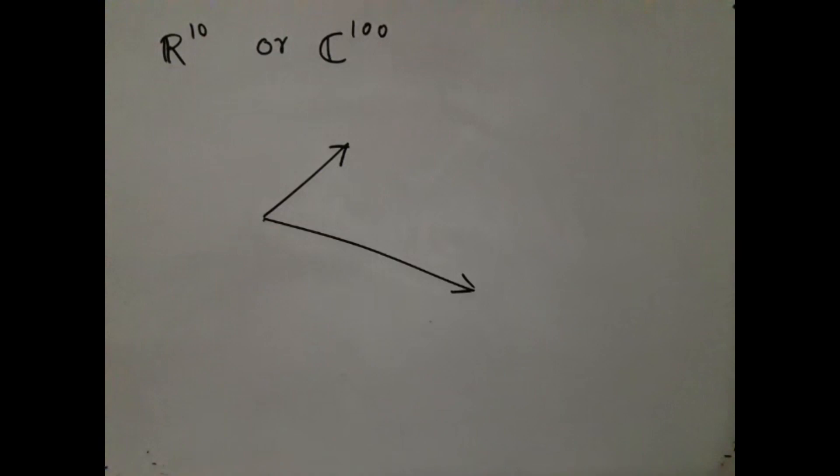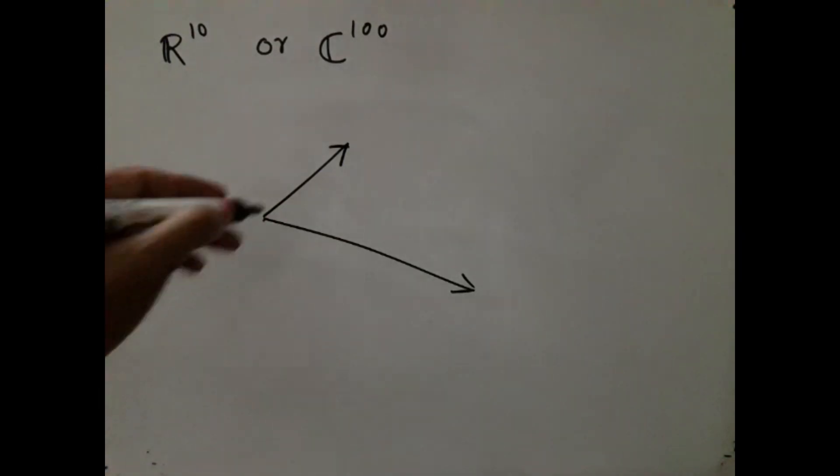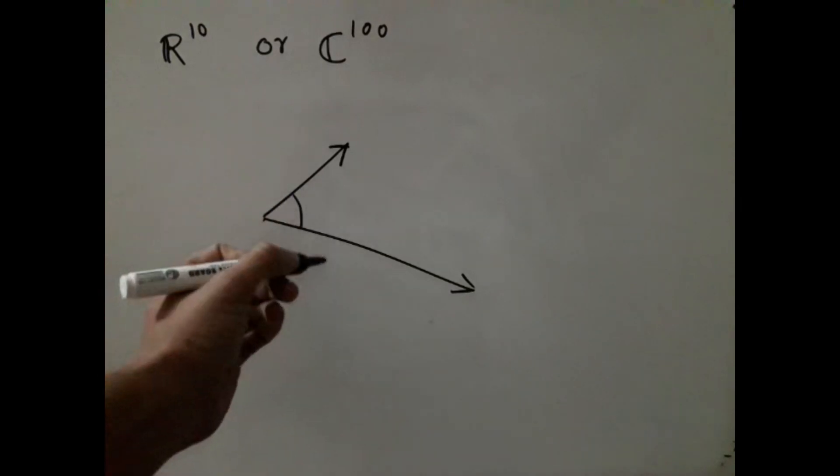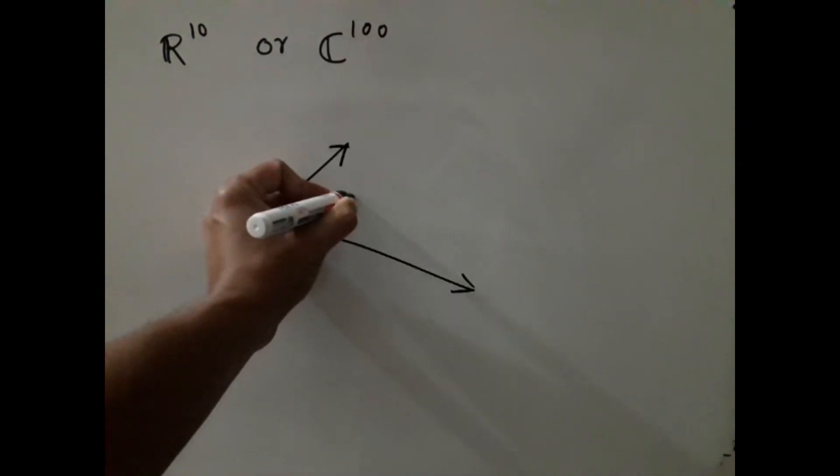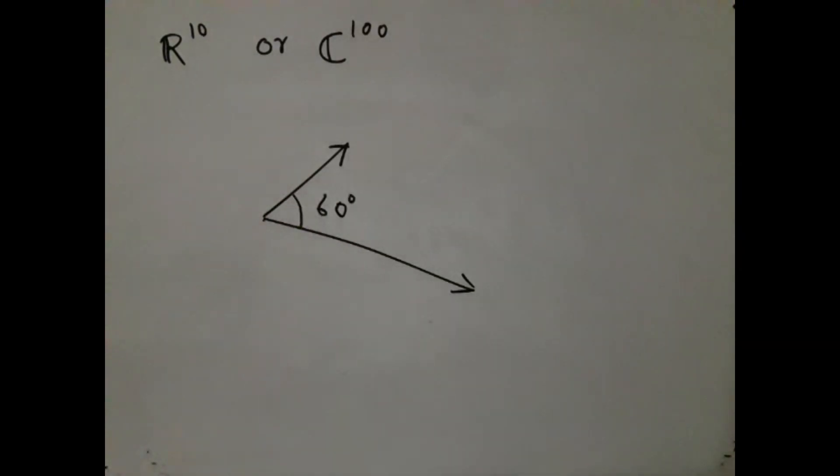For example, if we are given two vectors in say R^10 or even C^100, two vectors like this, can we say in some reasonable way that the angle between them is say something like 60 degrees? The surprising answer is yes.